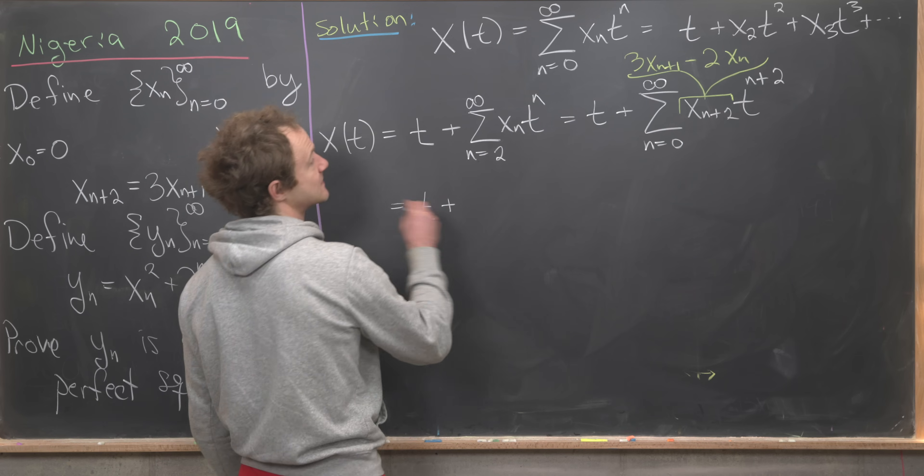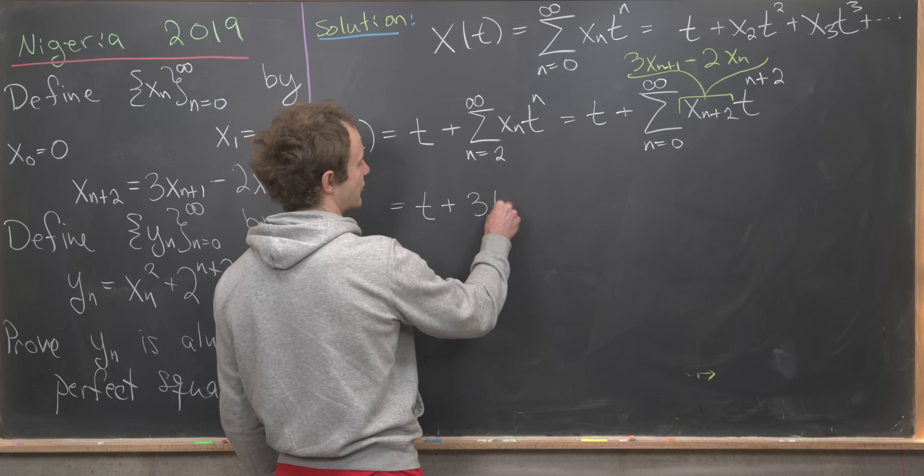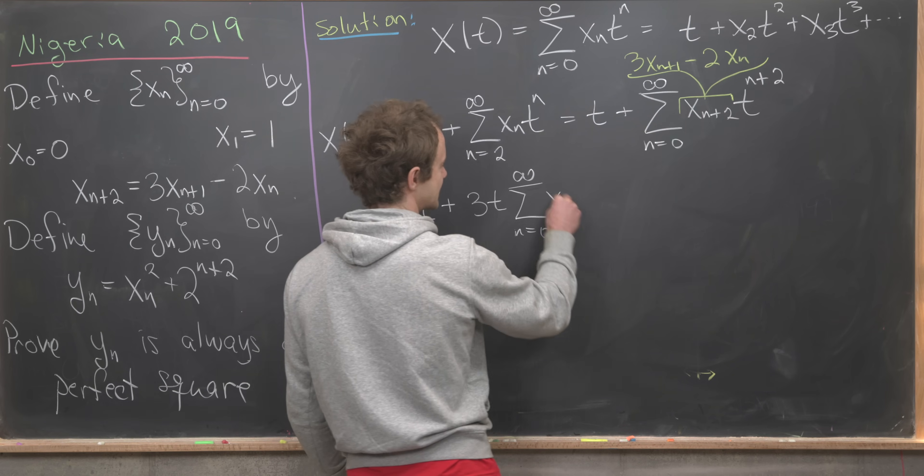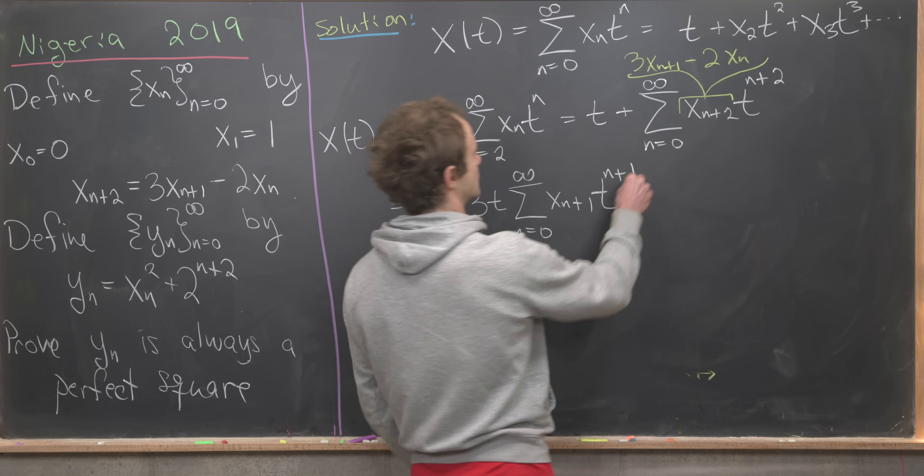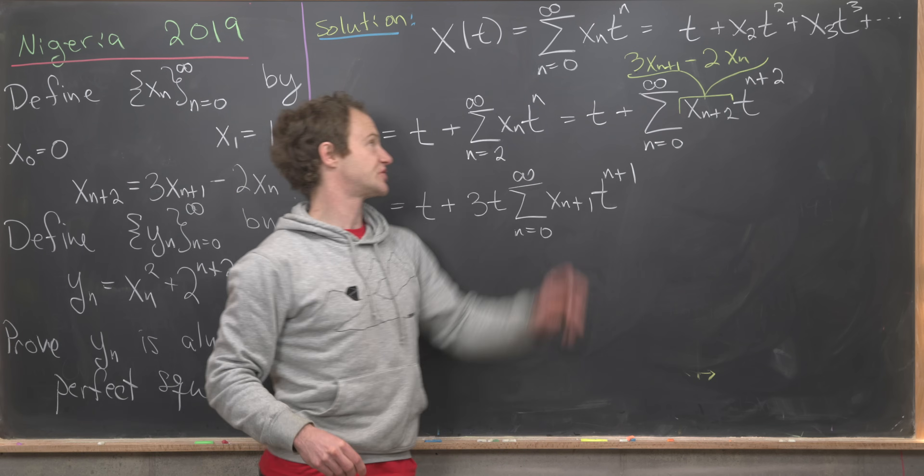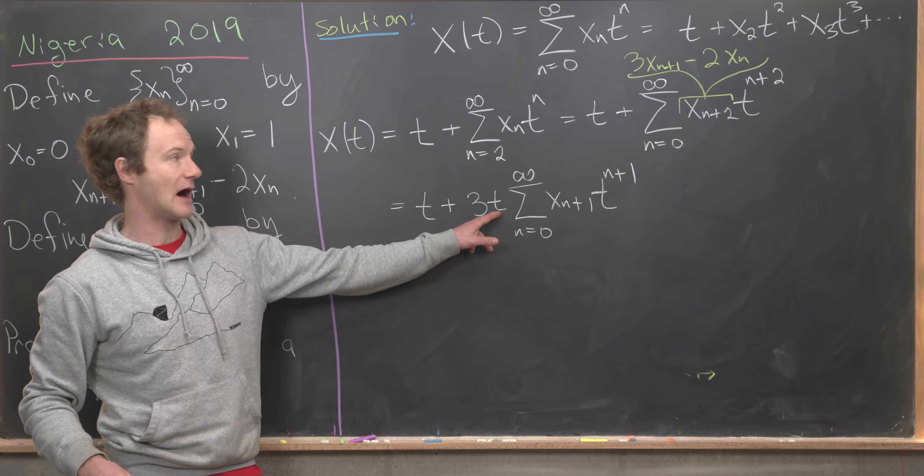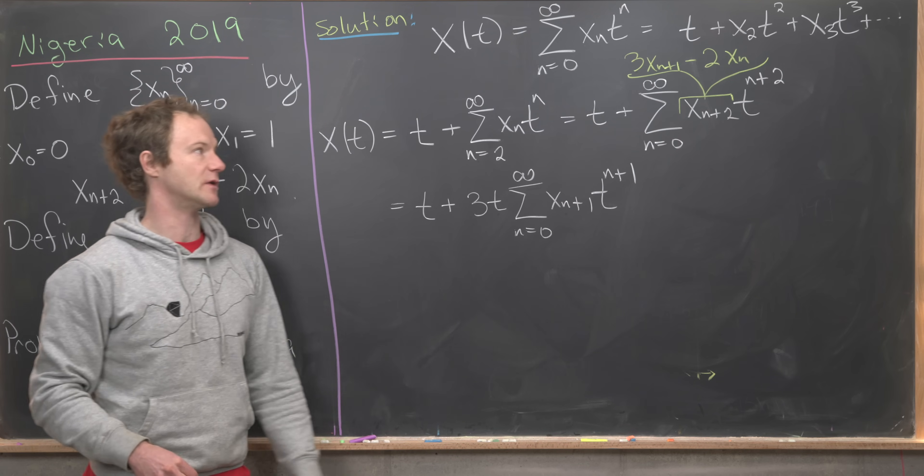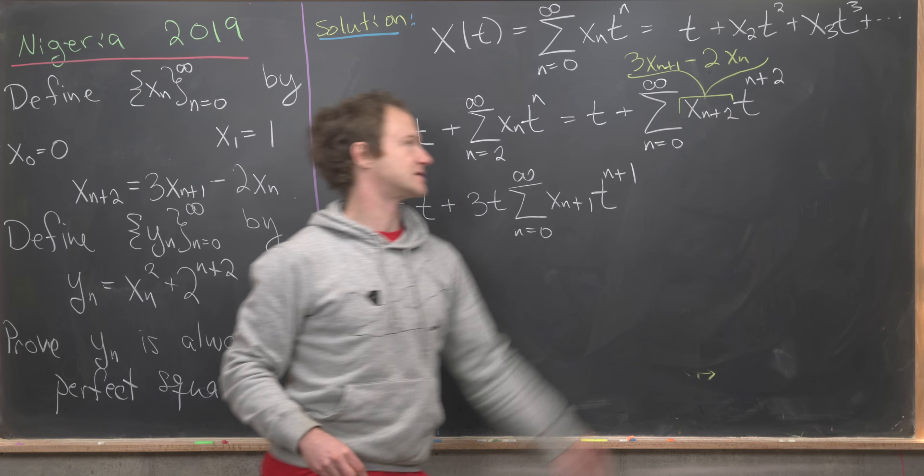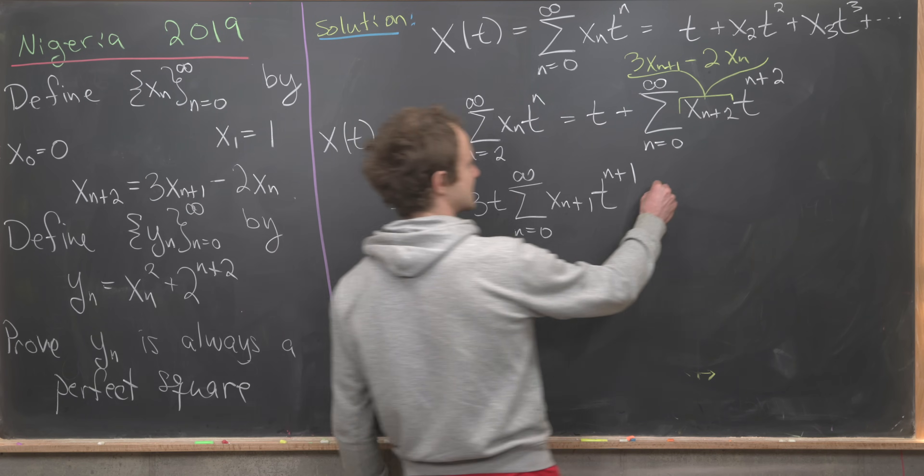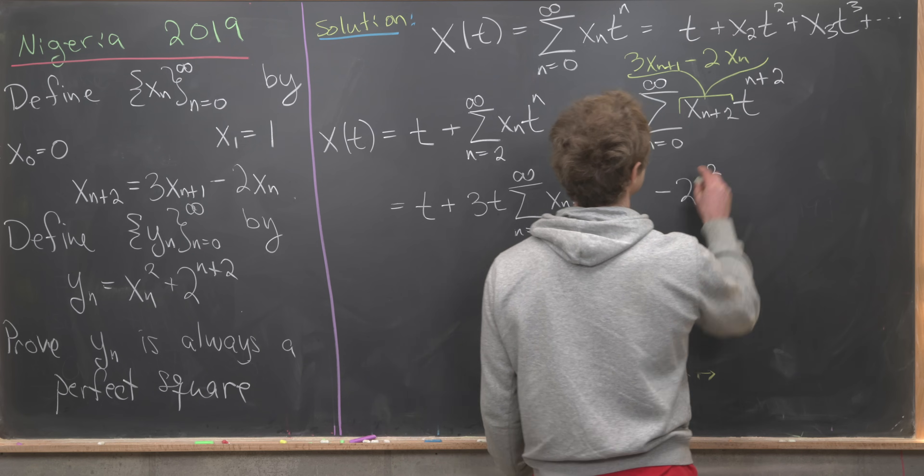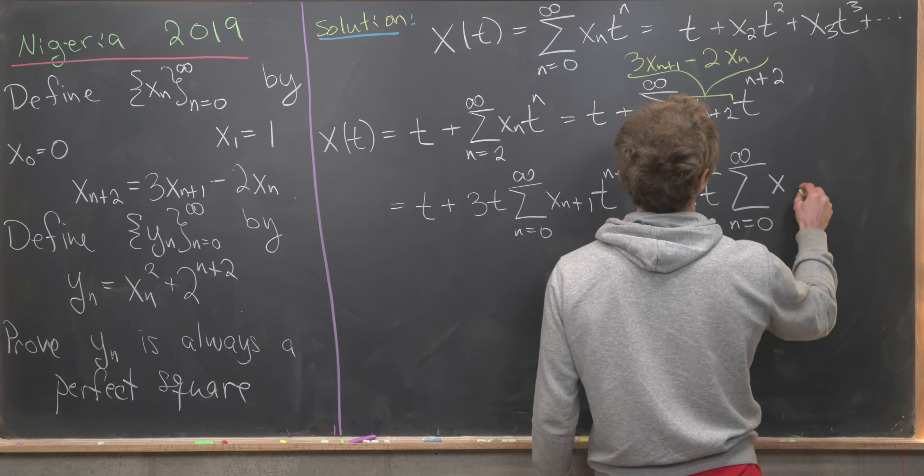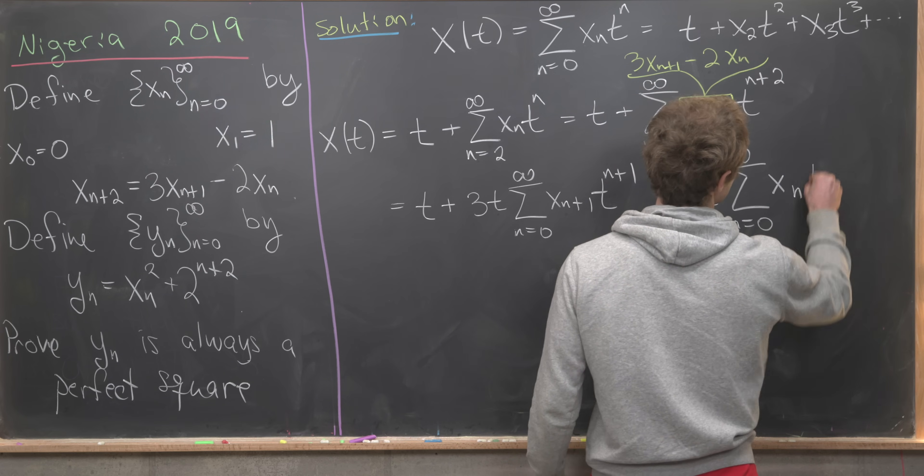We'll have t plus 3t times the sum as n goes from 0 up to infinity of x sub n plus 1, t to the n plus 1. Notice I took a 3 out and I took a power of t out, and I did that so my index matches my exponent. Now I'll do the same kind of thing for the second term, but I'll take out a t squared. That leaves me with minus 2 times t squared, and then the sum as n goes from 0 up to infinity of x sub n times t to the n.